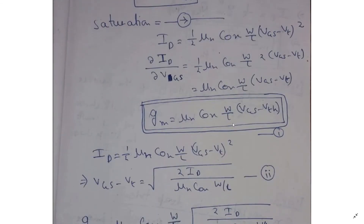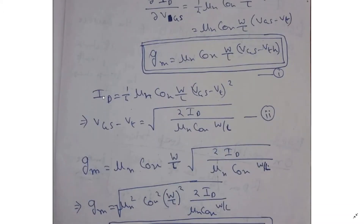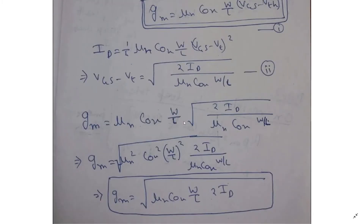Now some modifications we can do — we can play with this formula. One way: from ID = (1/2) · μn · Cox · (W/L) · (VGS − VT)², calculate (VGS − VT) to get VGS − VT = √(2·ID / (μn · Cox · W/L)). Now substitute this into the GM expression, and you get GM = μn · Cox · (W/L) · √(2·ID / (μn · Cox · W/L)). Simplifying, GM = √(μn · Cox · (W/L) · 2·ID). This is another formula for GM.